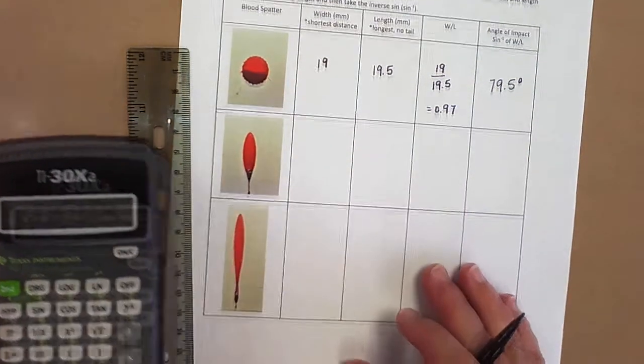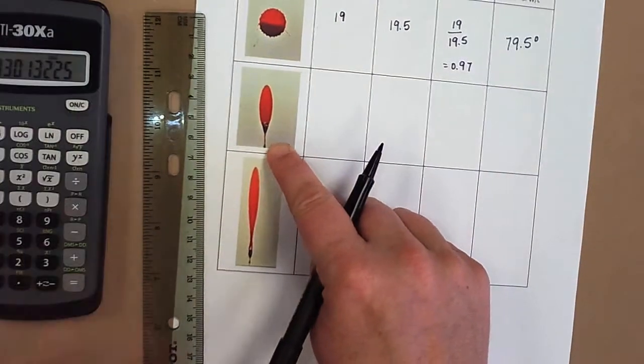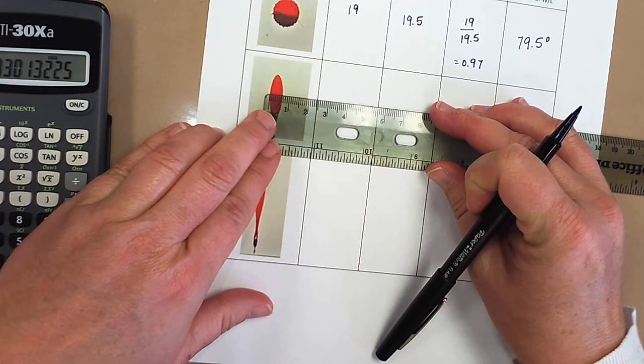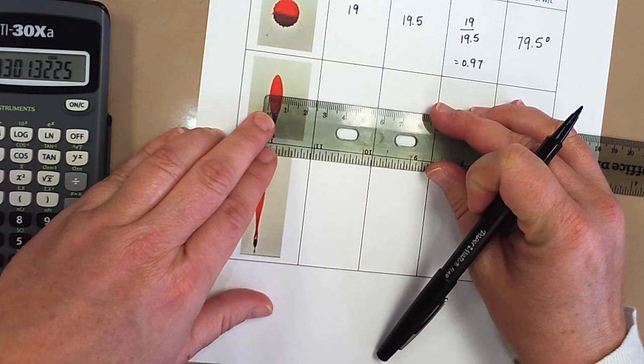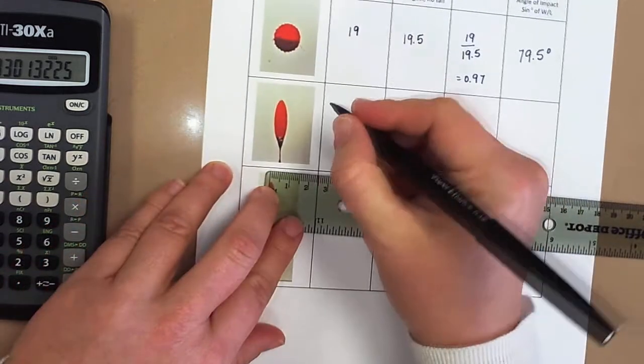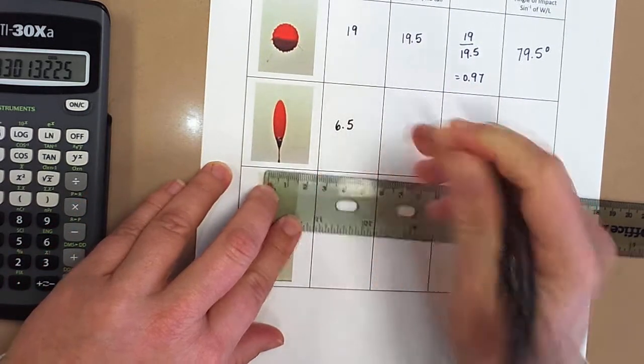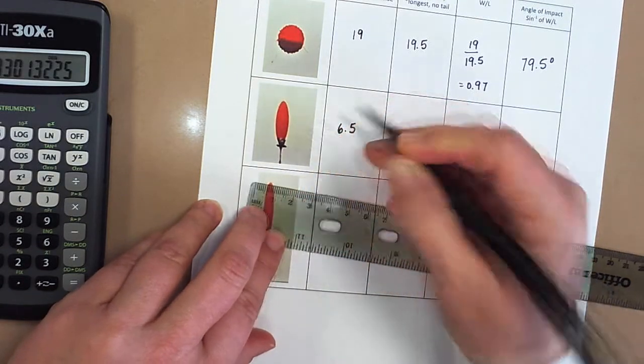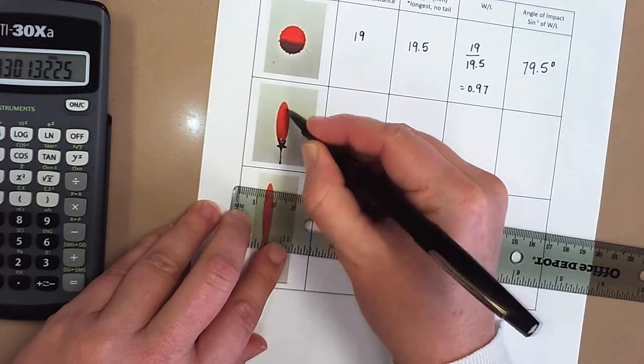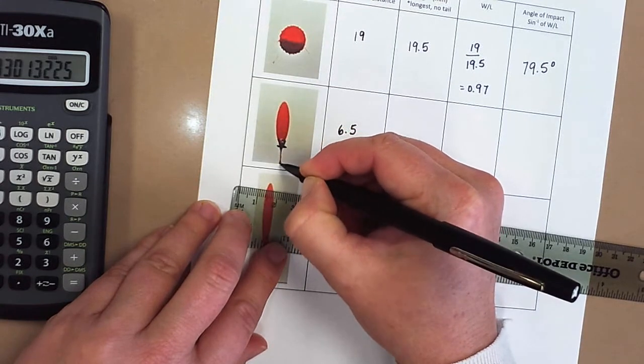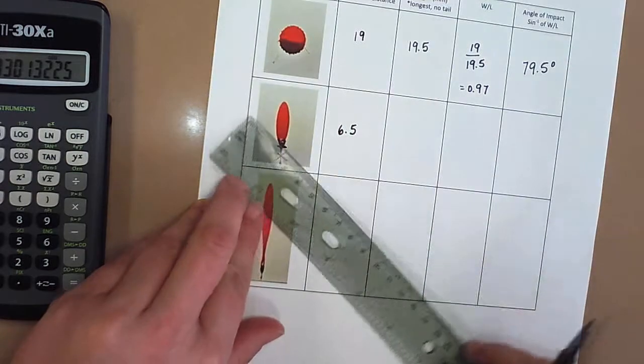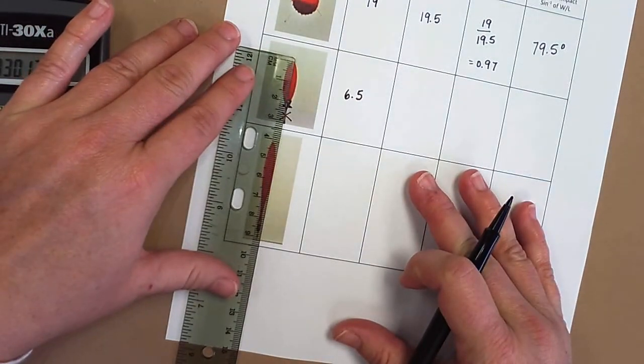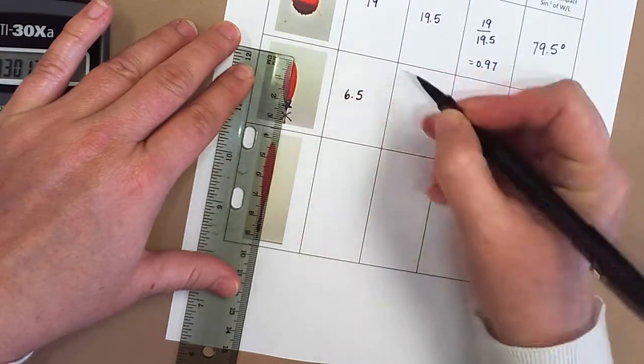Let's practice this again and look at one that has a tail. So first things first, I'm going to measure the width. The width is going to be side to side, so it's a pretty small one here. I got about 6.5 here. And then the length. In this I'm going to eyeball and estimate that the length of the blood droplet ends here. The parent drop ends there and then the tail begins. I do not want to include the tail in my measurement. So if I come up here and I measure that, I'm at about 22.